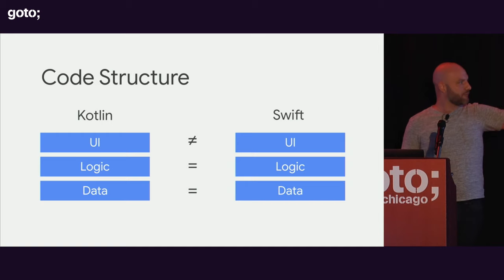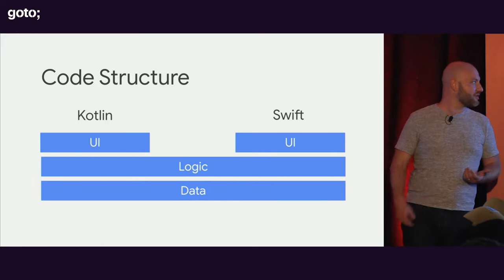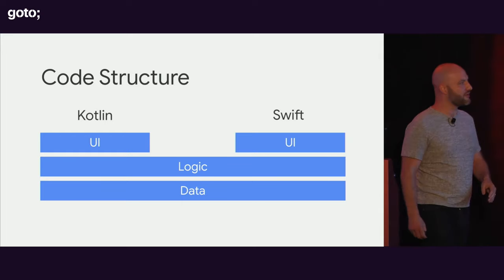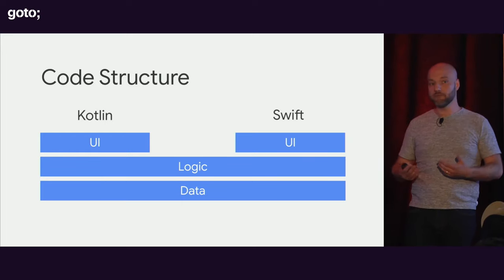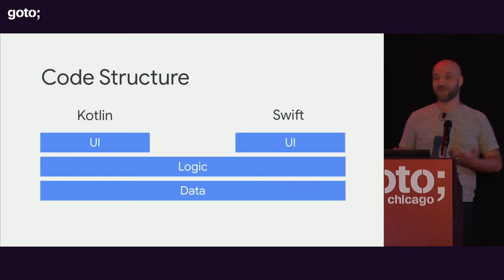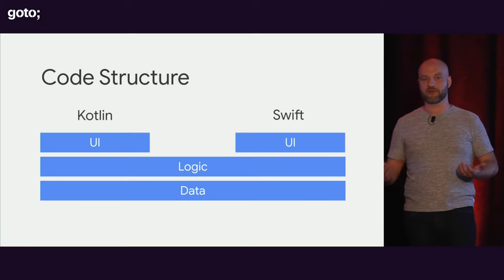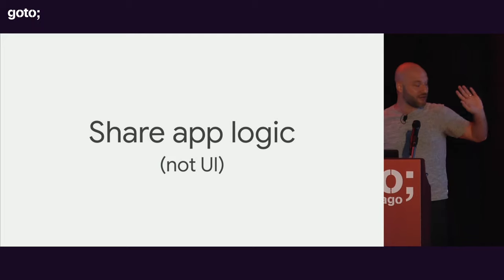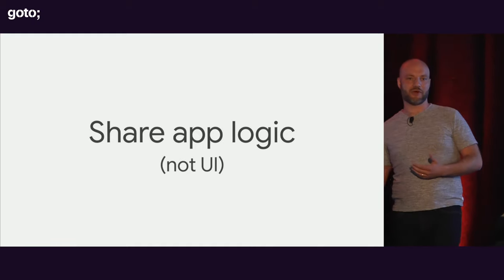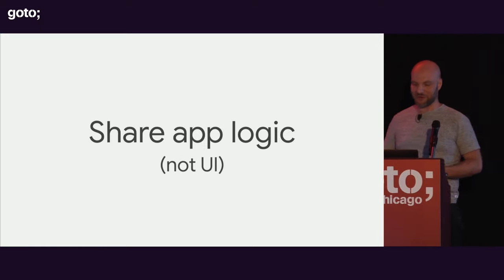So this is kind of the world that we're in today. What Kotlin Multiplatform gives us is the potential on mobile to change this picture. We still have the UI layers in Kotlin and Swift, but then down at the lower levels in the logic layer, we can move some or all of that code into code that can run on both platforms. Similarly with the data layer, we have the ability to move a lot of that code into common code. The real key idea of Kotlin Multiplatform as it is today is that you can share app logic, but probably not the UI. There's not currently a cross-platform UI toolkit built in Kotlin Multiplatform, so it would be hard to share the UI without a framework to call.